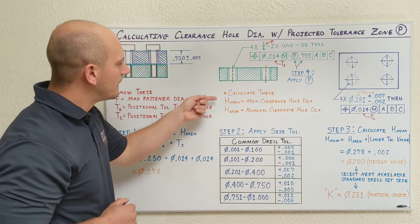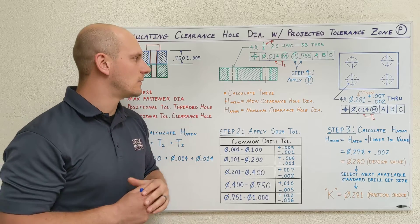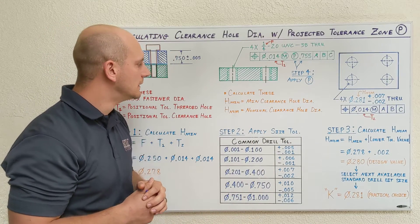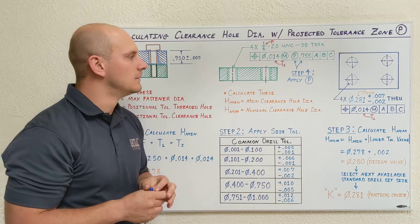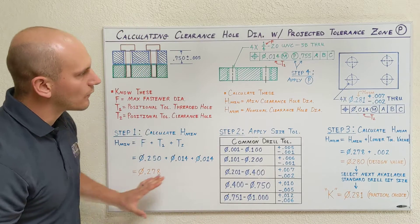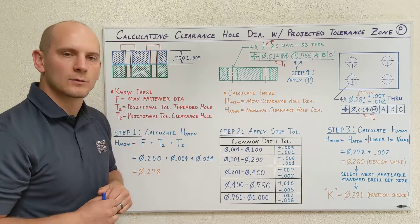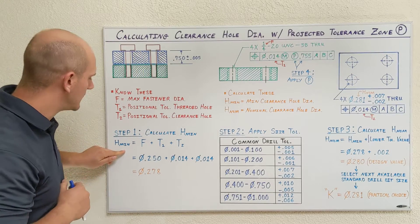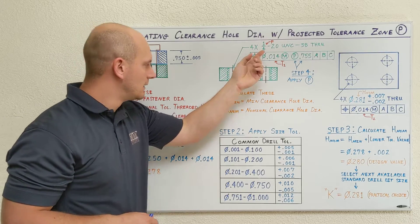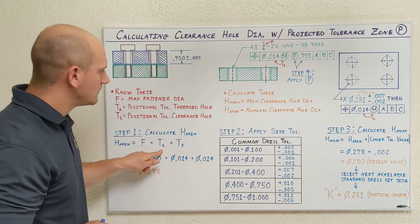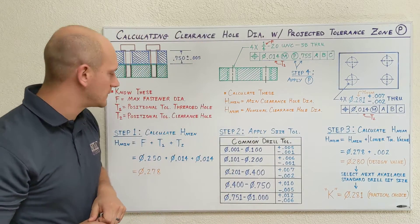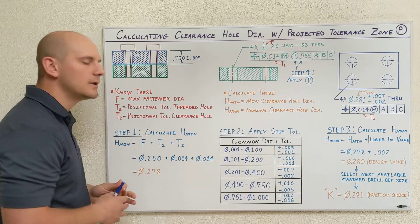We're going to calculate two values: the first is the minimum — the absolutely smallest — clearance hole diameter such that if these are machined at worst case and assembled, you won't have any interference. The formula is simply F plus T1 plus T2. F is our nominal thread size, 0.250. T1, the positional tolerance controlling our threaded feature, is 14 thousandths. T2, the positional tolerance controlling our clearance hole features, is 14 thousandths. Add all those up, you get a minimum clearance hole diameter of 0.278.